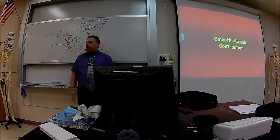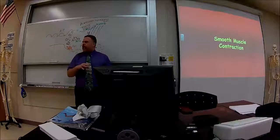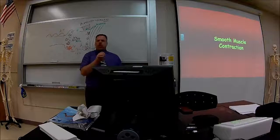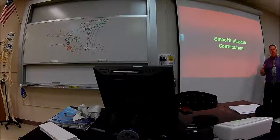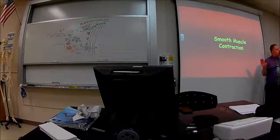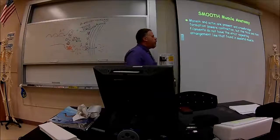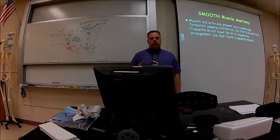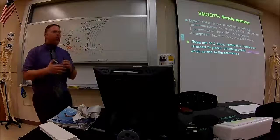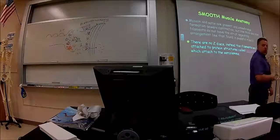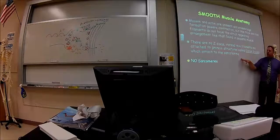Now let's talk about smooth muscle and cardiac muscle contraction. For smooth muscle anatomy: myosin and actin are present, and cross-bridge formation does occur, but the thick and thin filaments don't have the repeating stripes seen in skeletal muscle. There are no Z-discs. Instead, the thin filaments are attached to protein structures called dense bodies, which attach to the sarcolemma.